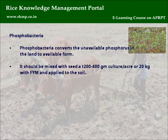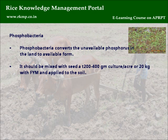Phosphor bacteria: Phosphor bacteria converts the unavailable phosphorus in the land to available form. It should be mixed with seed at 200 to 400 gram culture per acre, or 20 kg with FYM and applied to the soil.